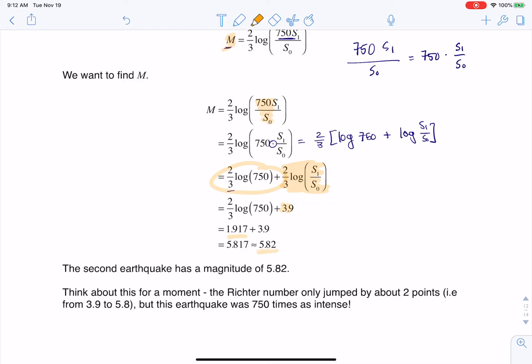I add that all up and we, we round our, well, we don't always, we usually round our Richter numbers, I would say to 5.8, but this said go ahead and do it to the nearest hundredth. So I went to 5.82.